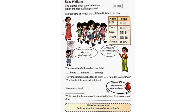How do we know who is in first place? Look at the time on the digital clock. The time when Mili reached the finish: 10 hours 31 minutes 32 seconds. How much time did she take to finish? 1 minute 32 seconds.